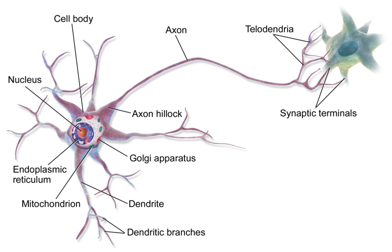An example of a neural circuit is the trisynaptic circuit in the hippocampus. Another is the Papez circuit linking the hypothalamus to the limbic lobe. There are several neural circuits in the cortico-basal ganglia-thalamocortical loop. These circuits carry information between the cortex, basal ganglia, thalamus, and back to the cortex. The largest structure within the basal ganglia, the striatum, is seen as having its own internal microcircuitry.